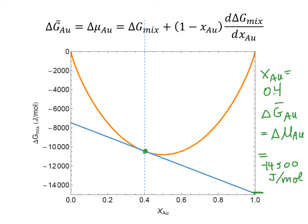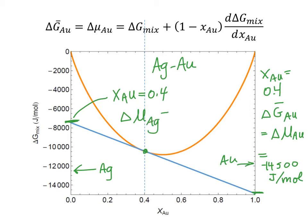If we read off the intercept on the other side, we have to know what this curve is for. It turns out that it's for silver gold. So that means that this side is pure gold, this side is pure silver. So that here at XAU equals 0.4 delta mu AG equals about negative 7,500. So from the curve of delta G mixing, we can find these values of delta mu.